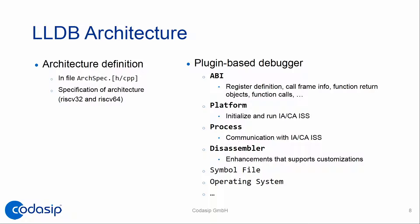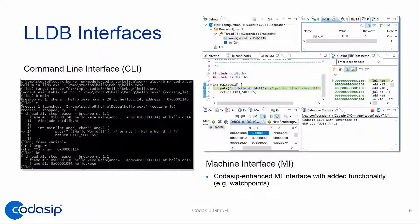Those four plugins — ABI, platform, process, and disassembler — are the most important, at least for us. If you just need an off-the-shelf RISC-V target, you need the ABI plugin. Looking at the LLDB interface, there are two kinds: one is a command line interface similar to GDB. LLDB has its own set of commands, but there is a compatibility layer so you don't have to learn new commands unless you want to.